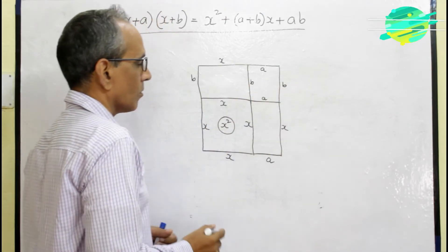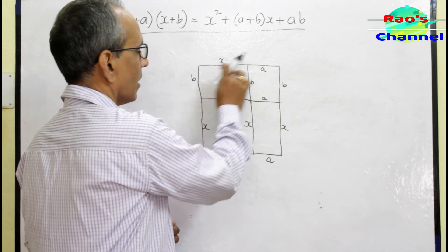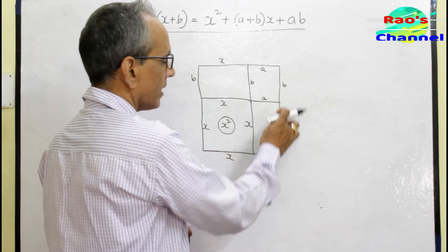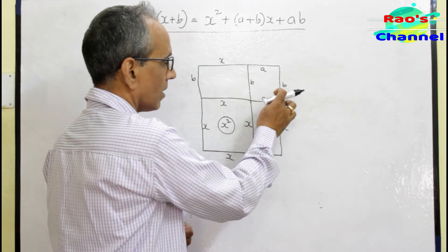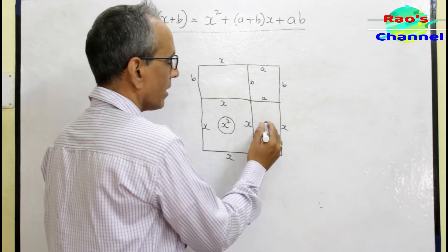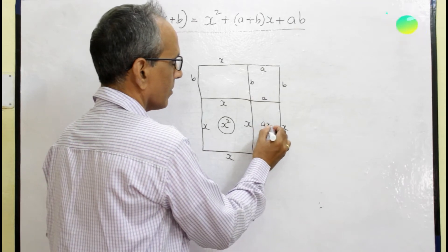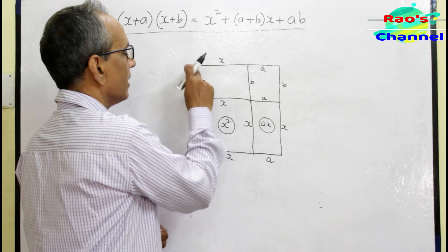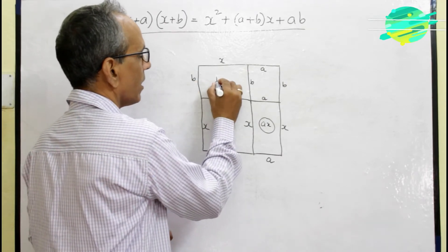Now we have two rectangles of course with different dimensions. This is a rectangle of length x and a units, its area is ax. And this is x and b, so this is bx.